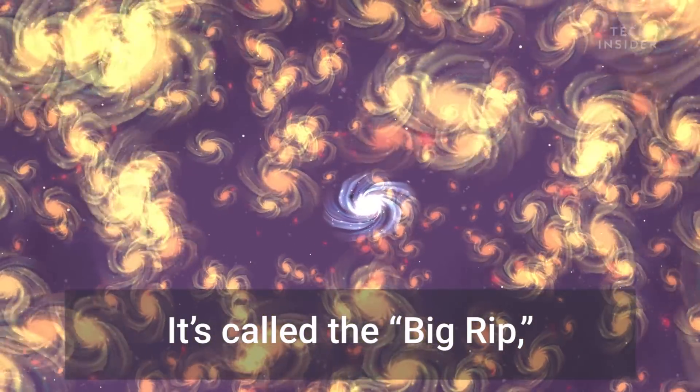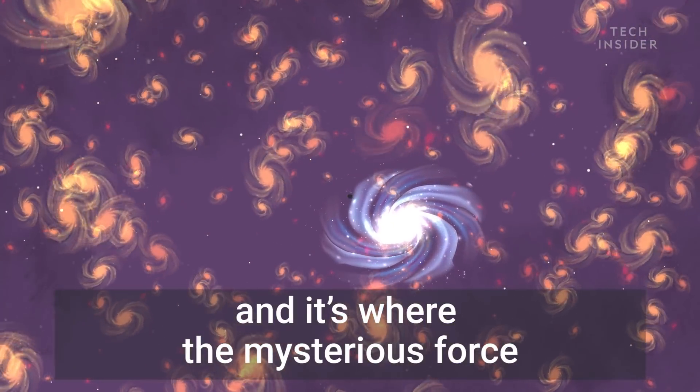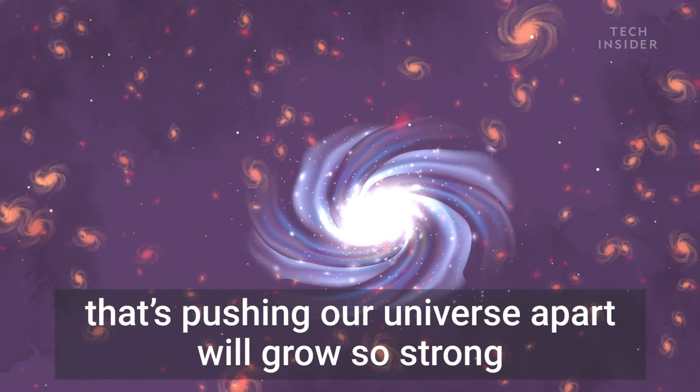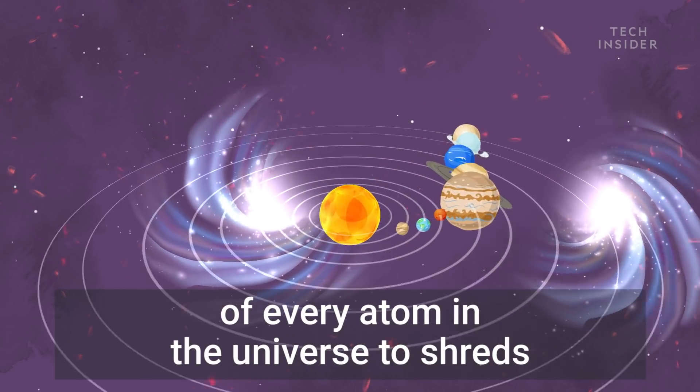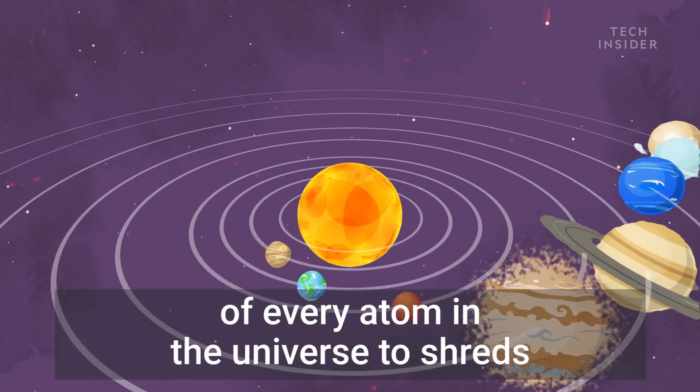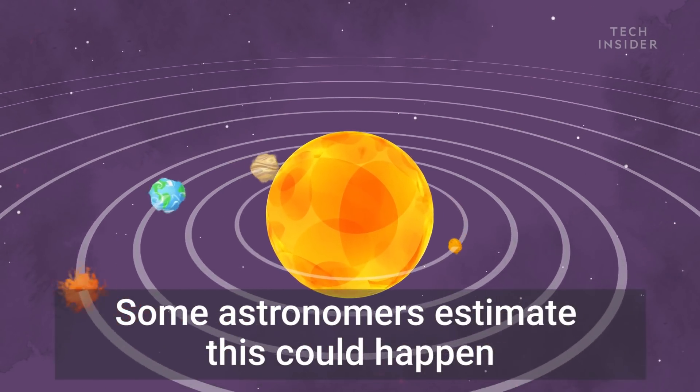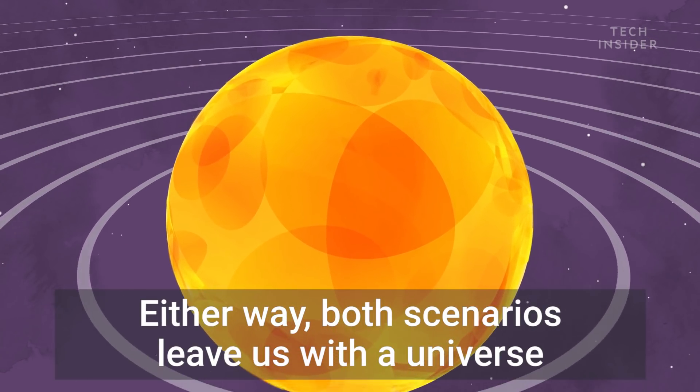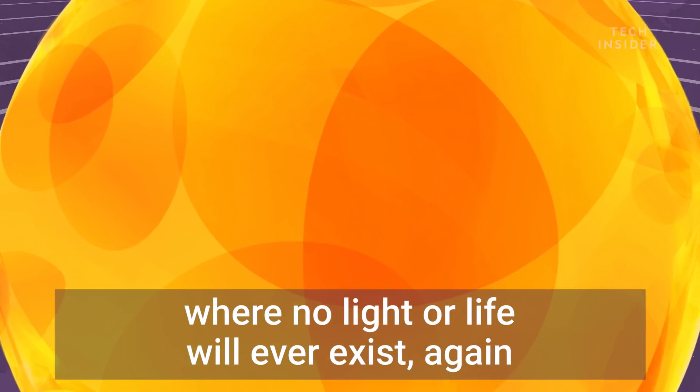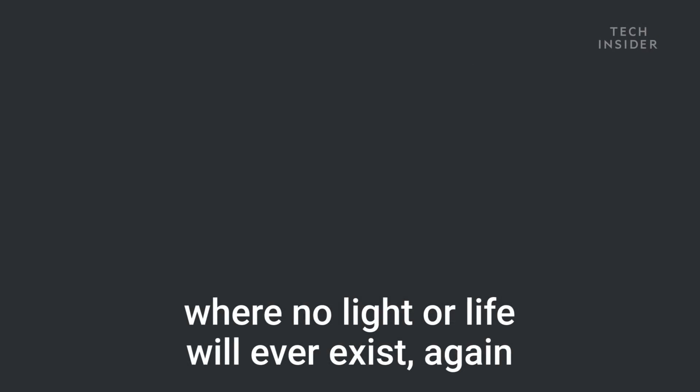It's called the Big Rip, and it's where the mysterious force that's pushing our universe apart will grow so strong that it will rip every fundamental piece of every atom in the universe to shreds. Some astronomers estimate this could happen as soon as one trillion years from now. Either way, both scenarios leave us with a universe where no light or life will ever exist again.